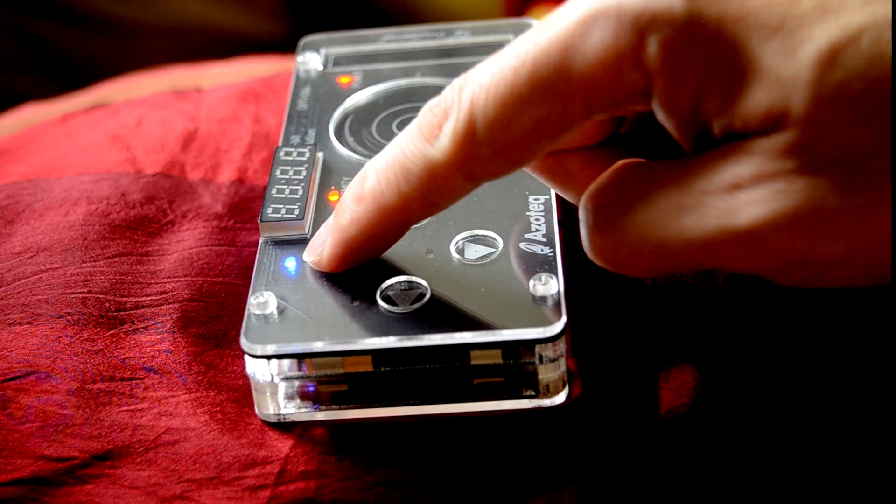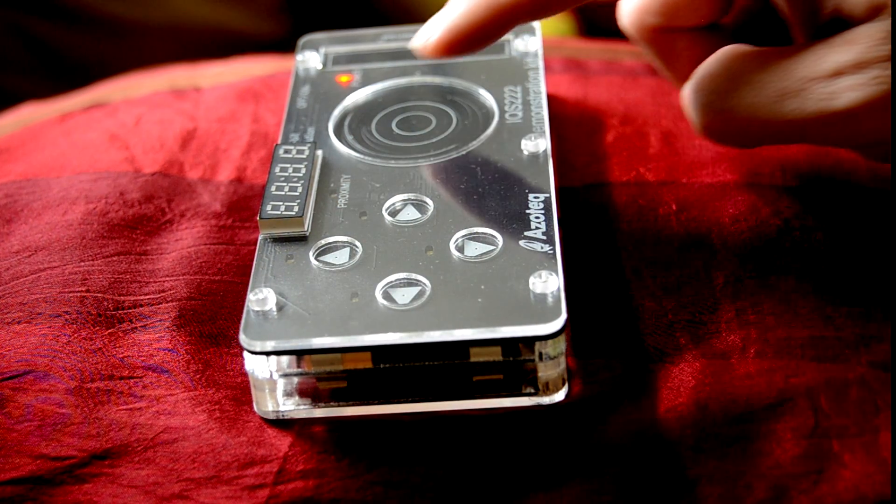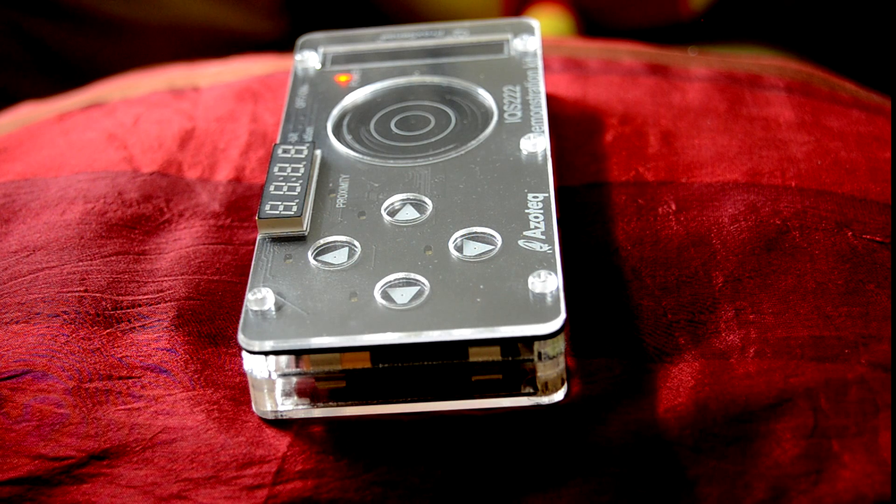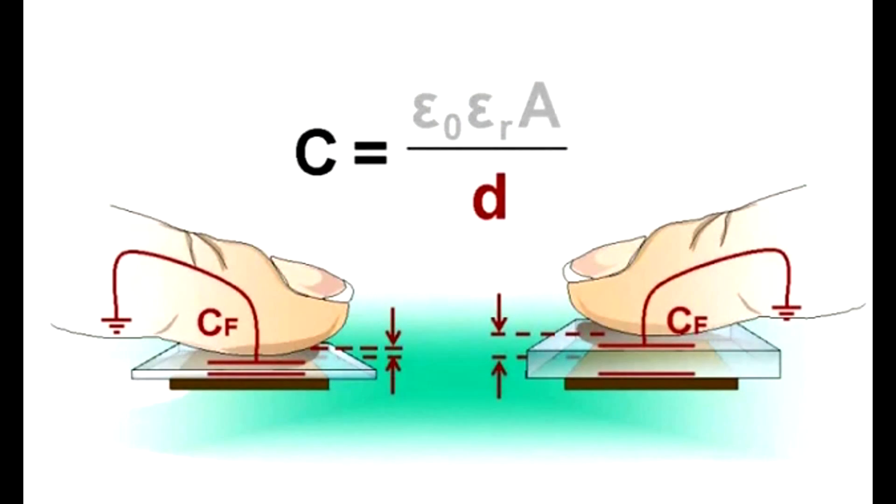But exactly where is the capacitor and how does a human finger change the capacitance? A common model is that the electrode forms one plate of the capacitor and the grounded finger forms the other plate and changes the overall capacitance of the sensor.